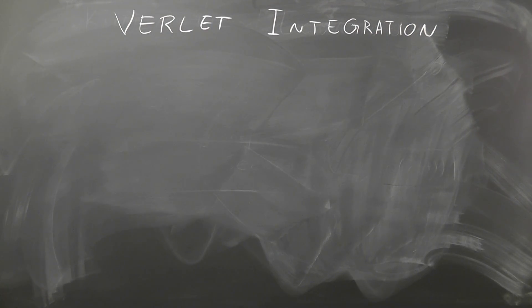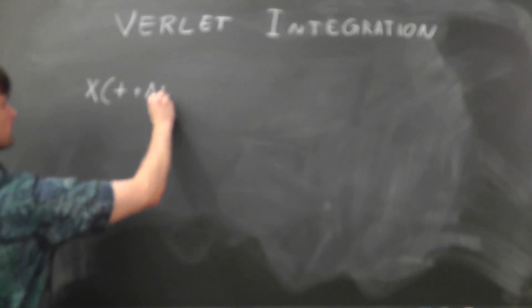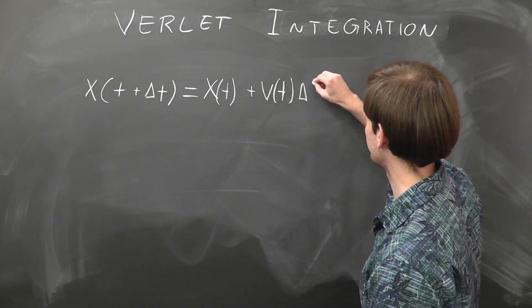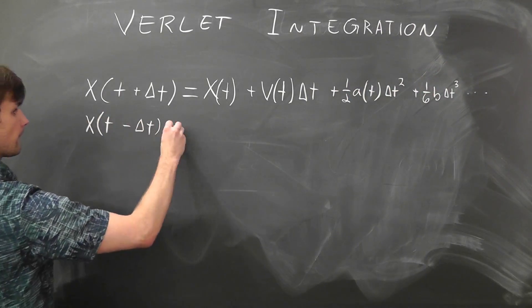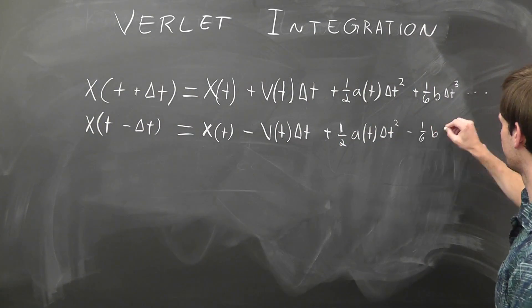We want to find the trajectory of some object influenced by some force field. So we start with the object's position and try to find its new position one time step in the future. Obviously, this follows from the kinematic equation. The trick here is that we also take one time step back.